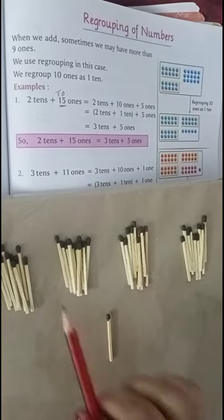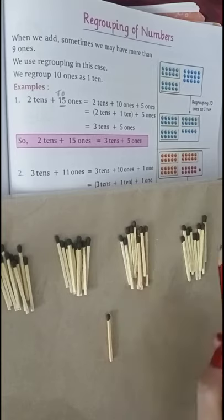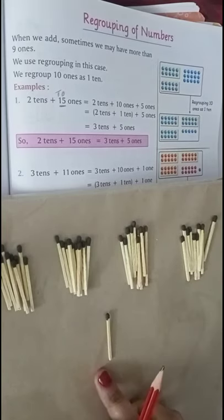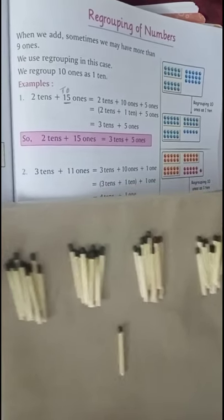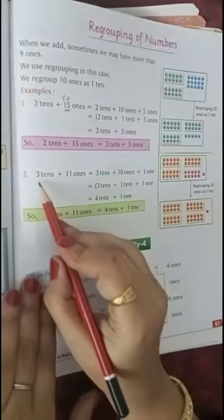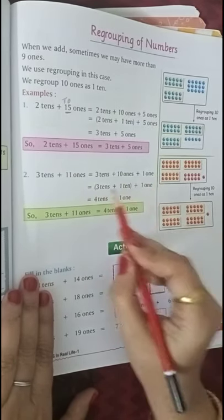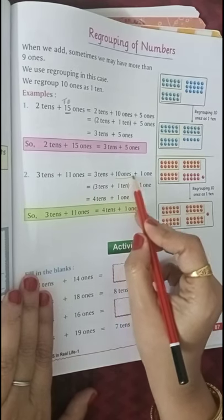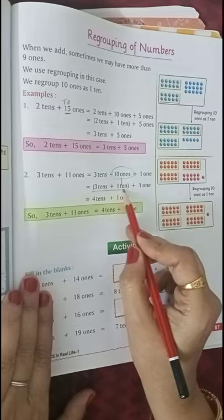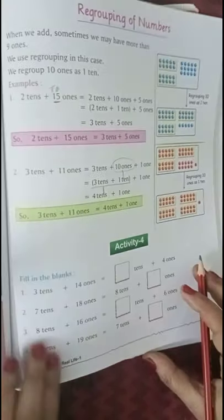1, 2, 3, 4. 4 times 10: 10, 20, 30, 40. 40 plus 1 is 41. You can see the book now. 3 tens plus 11 ones, so 3 tens plus 10 ones plus 1 one. This 10 ones we made into 1 ten. So 3 tens plus 1 ten is 4 tens plus 1 one. Okay?